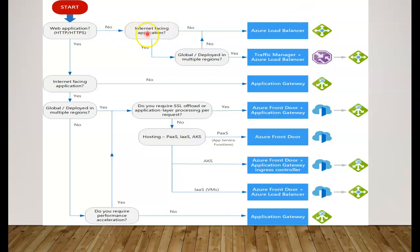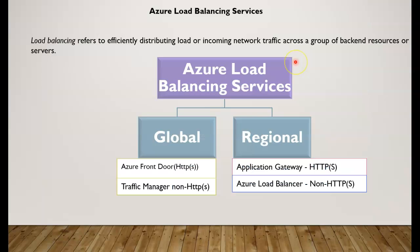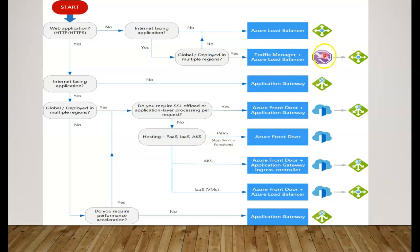If the application is internet-facing and you need a global deployment across multiple regions, you need a combination of products. Traffic Manager combined with Load Balancer, since Traffic Manager works at the global level. You can put Traffic Manager in front as well as the load balancer.